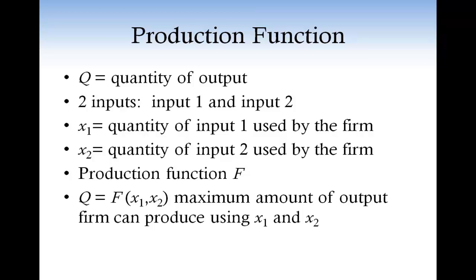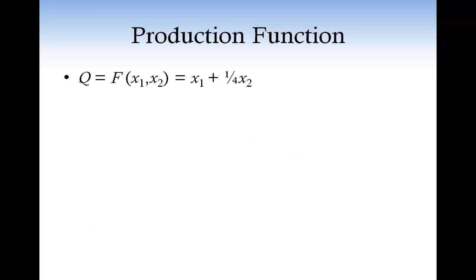Okay, I will give you a numerical example. Consider the following production function: Q, function of the inputs x1, x2, equal to x1 plus 1/4 times x2. If the firm uses one unit of input 1 and zero units of input 2, then the maximum amount of output that the firm can produce is 1.